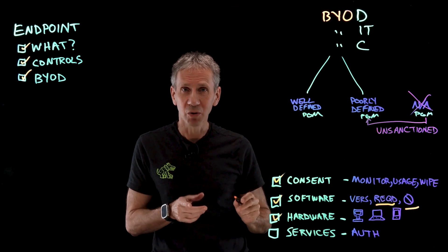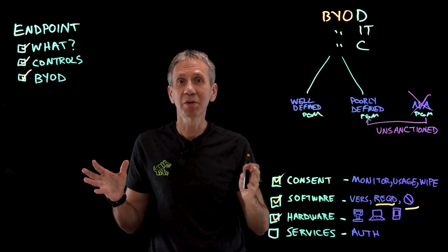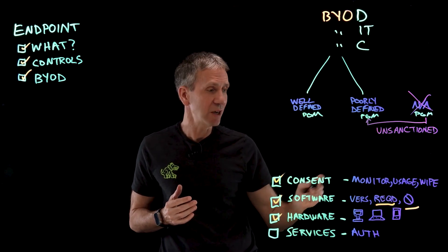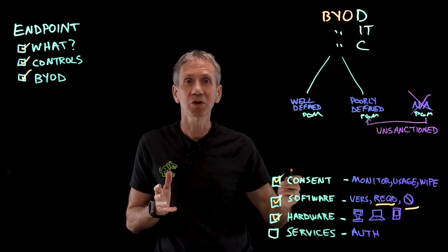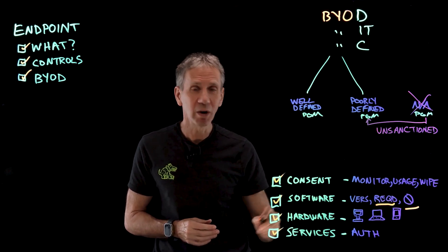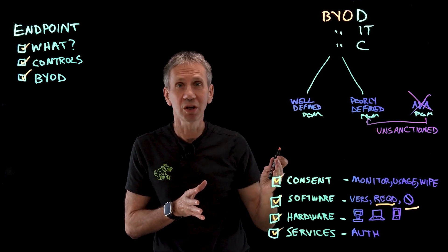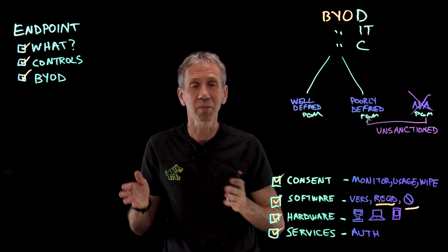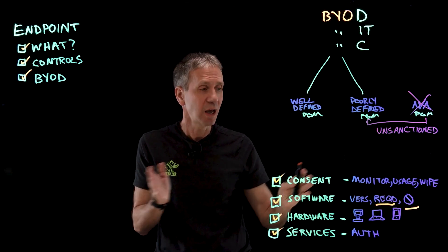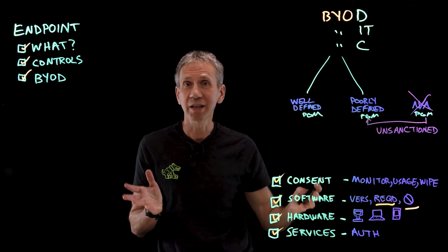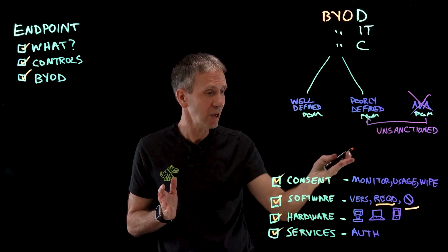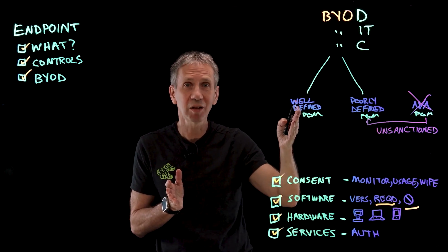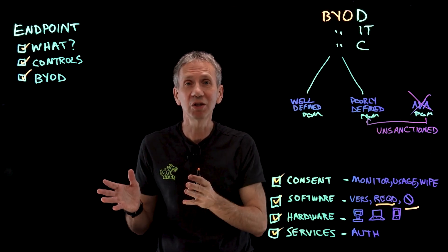From a hardware perspective, an organization may specify that only devices of a certain hardware configuration will be supported. We can't support every single device anyone might bring in. We also need to define which services can be used — cloud is a good example. We should direct users to only authorized services; for instance, one cloud-based file sharing program that everyone must use. It's best not to say no — it's better to say how. If we make it easier to do the right thing than the wrong thing, users will follow.